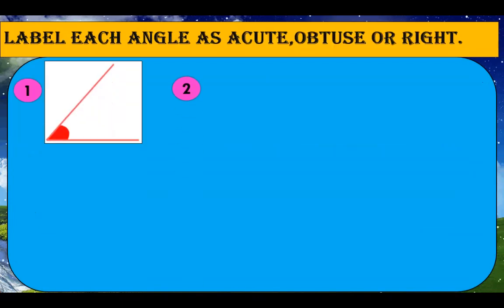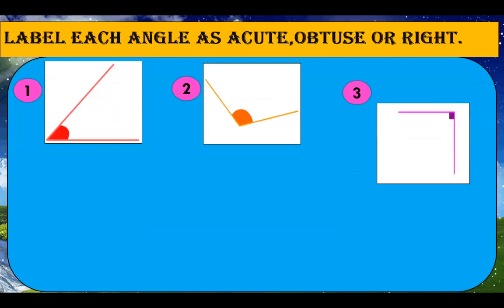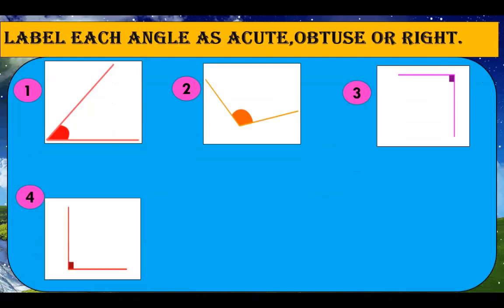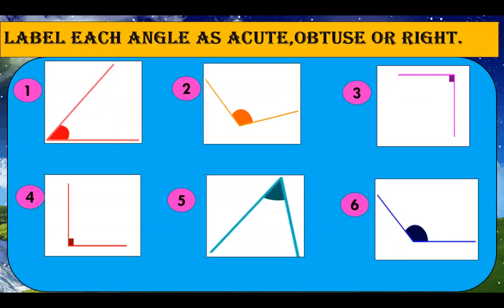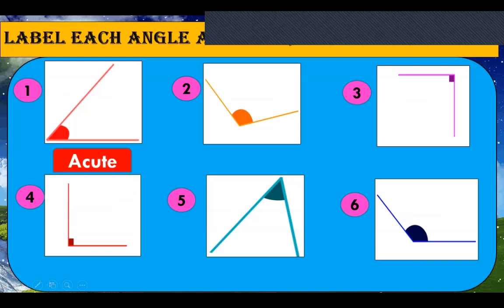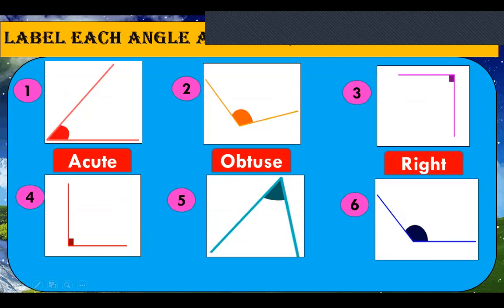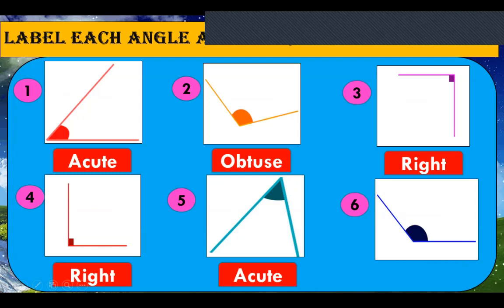I am going to display six different angles and you will guess each angle whether it's acute, obtuse or right. Let's check. The first angle is an acute angle as it is less than a right angle. The second is an obtuse angle as it is larger than a right angle. The third and fourth angles are right angles. The fifth angle is an acute angle and the last one is an obtuse angle.